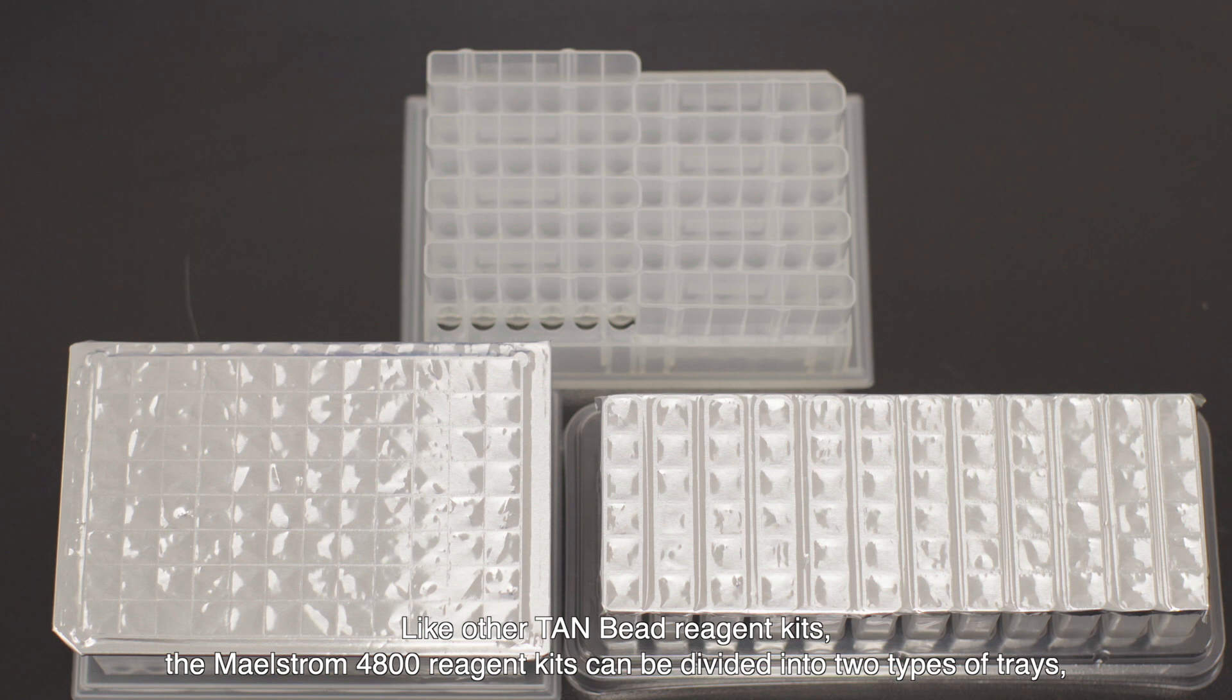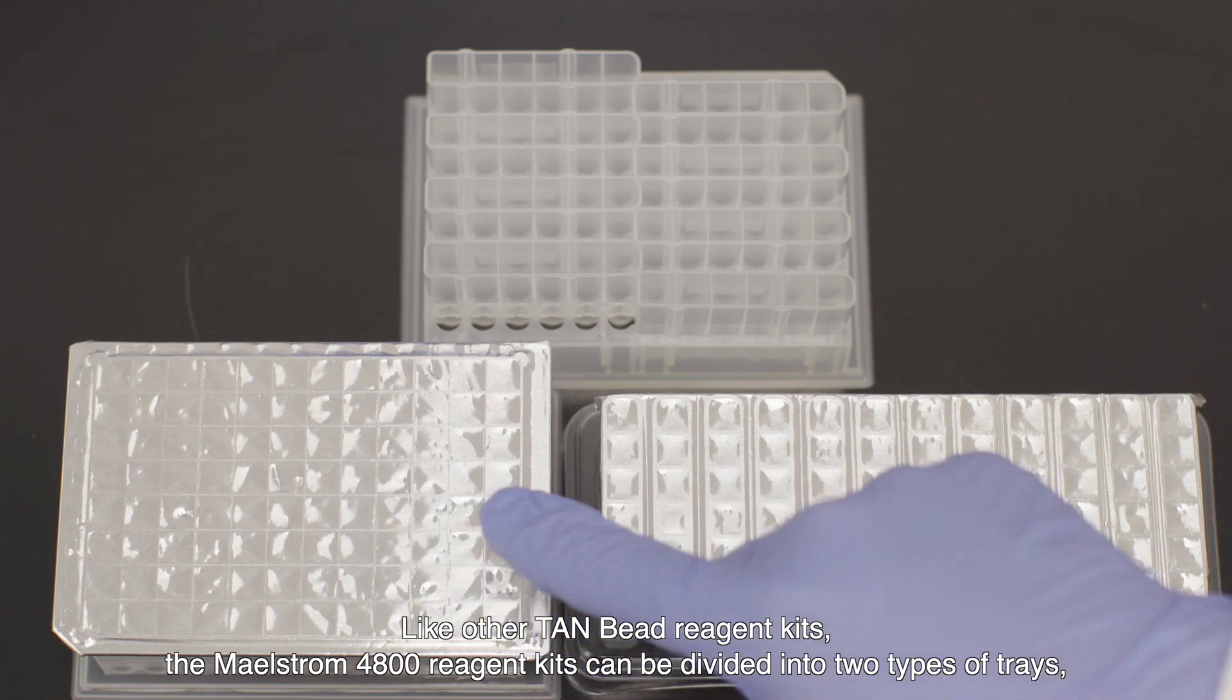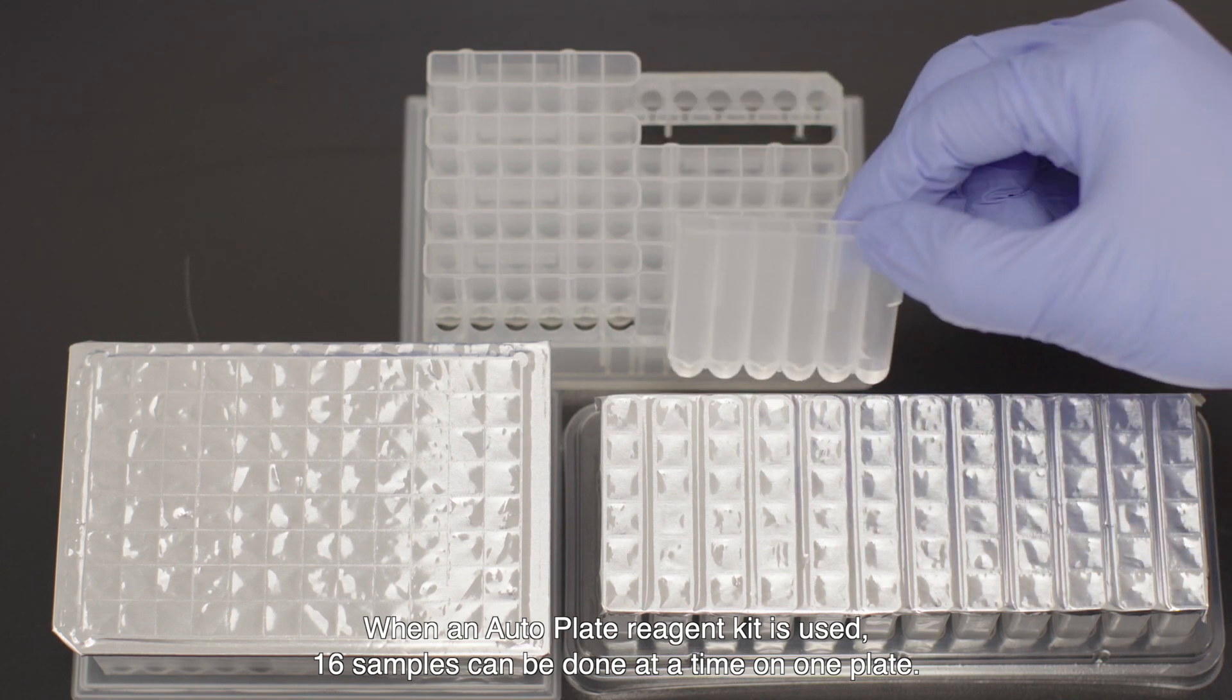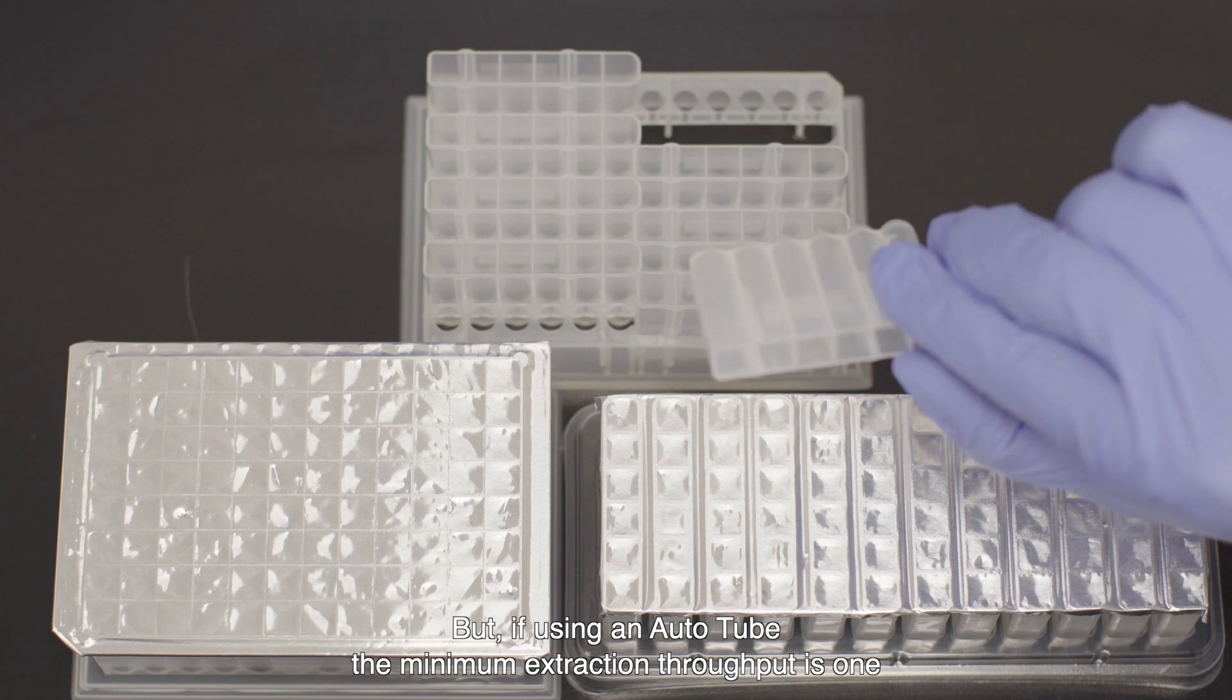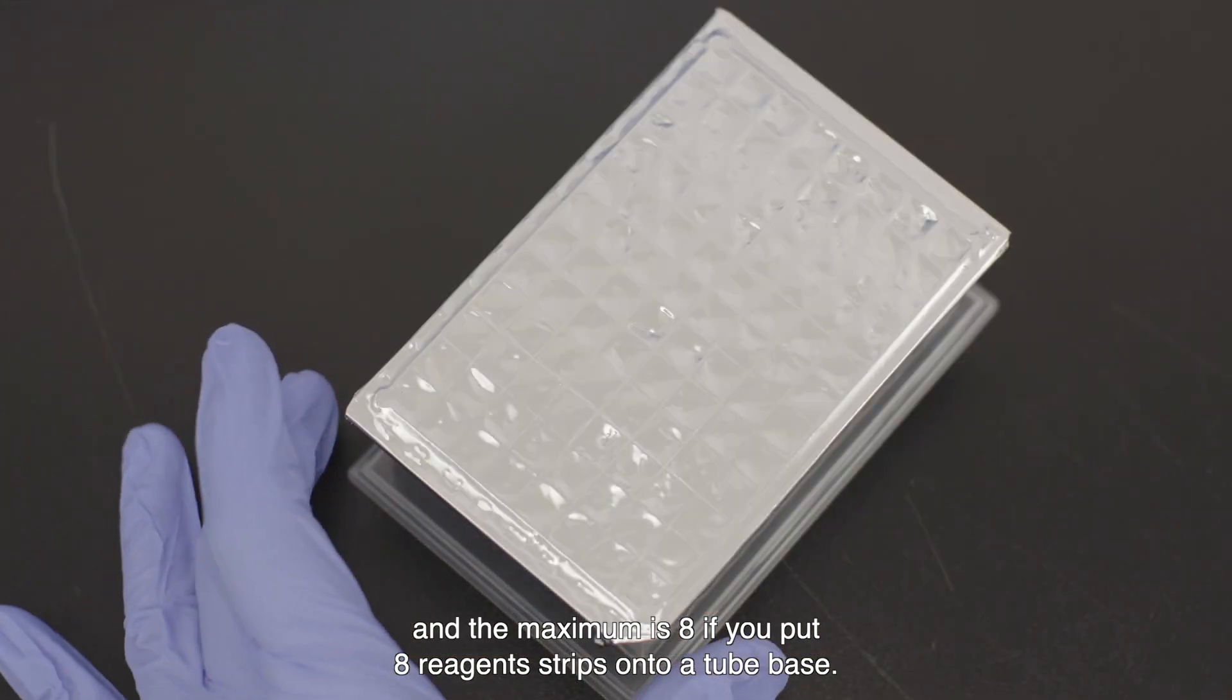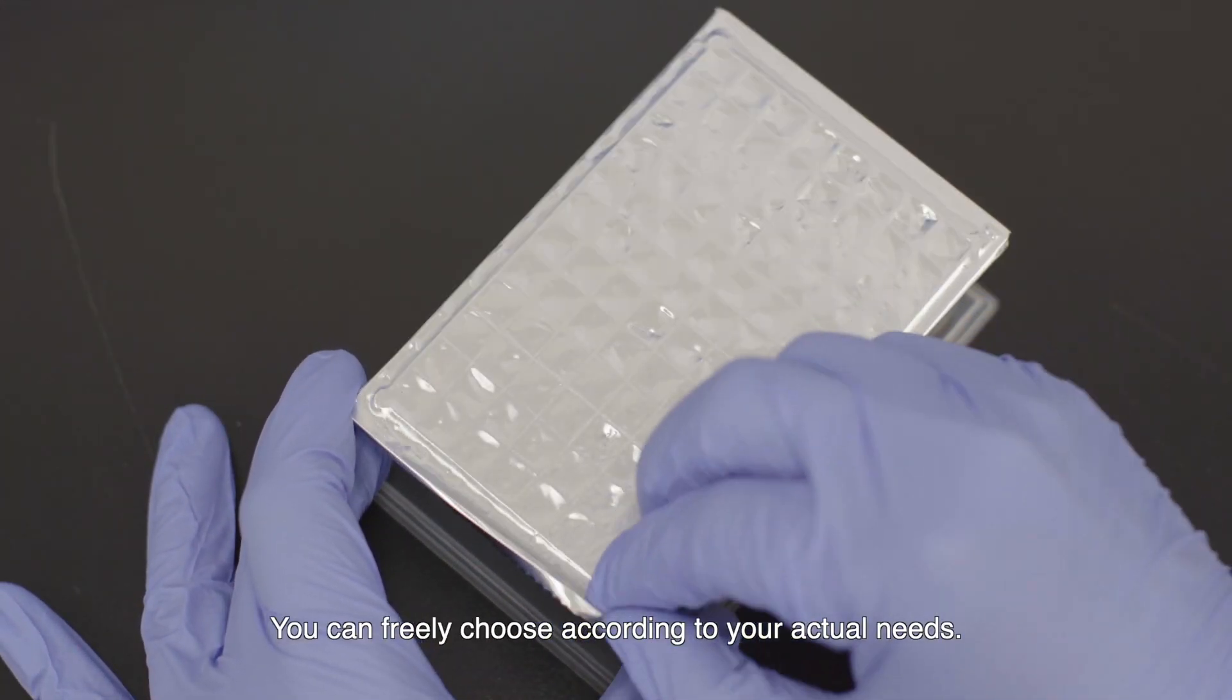Like other TAM bead reagent kits, the Maelstrom 4800 reagent kits can be divided into two types of trays: the auto plate and auto tube. When an auto plate reagent kit is used, 16 samples can be done at a time on one plate, but if using an auto tube, the minimum extraction throughput is one and the maximum is eight if you put eight reagent strips onto the tube base. You can freely choose according to your actual needs.